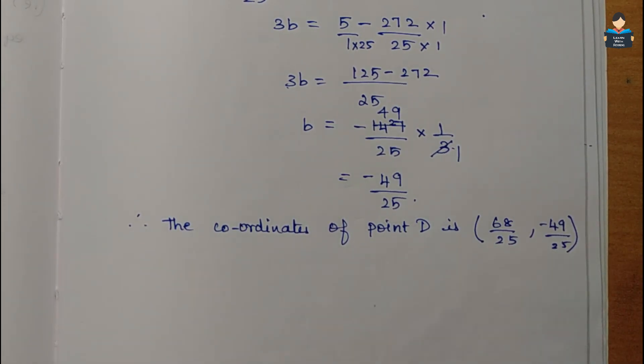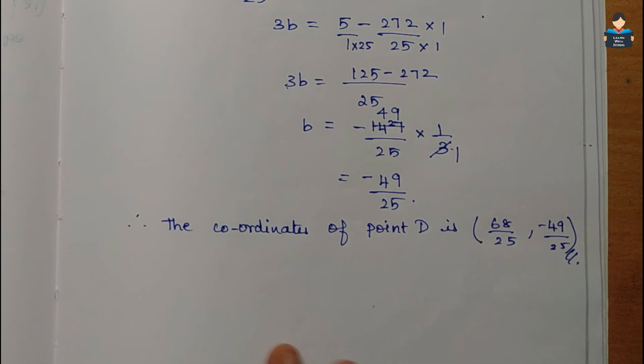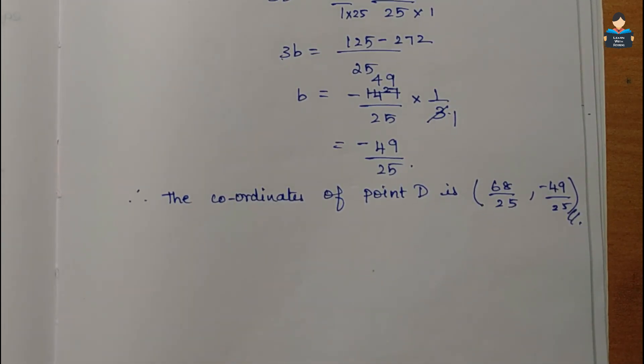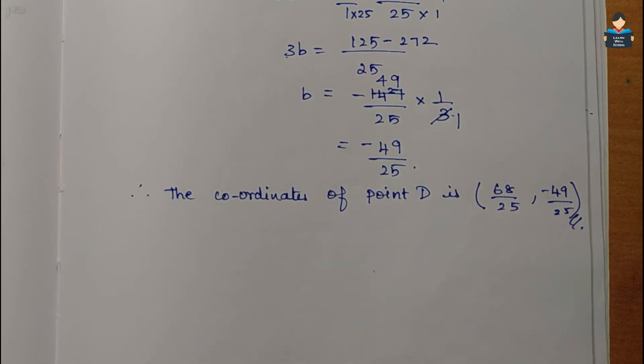So the final answer is D = (68/25, -49/25). That completes the sum. The next video will cover another set of sums. Please like, share, and subscribe. Thank you.